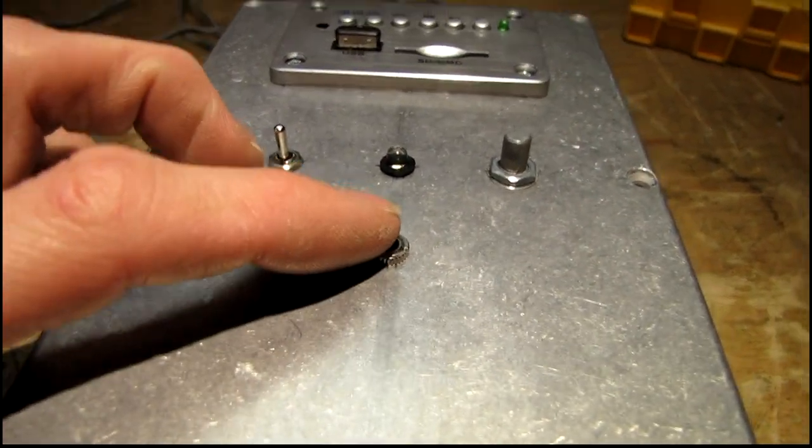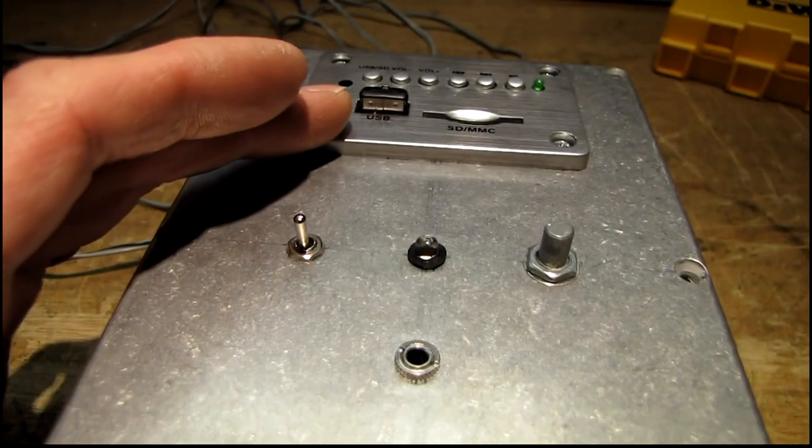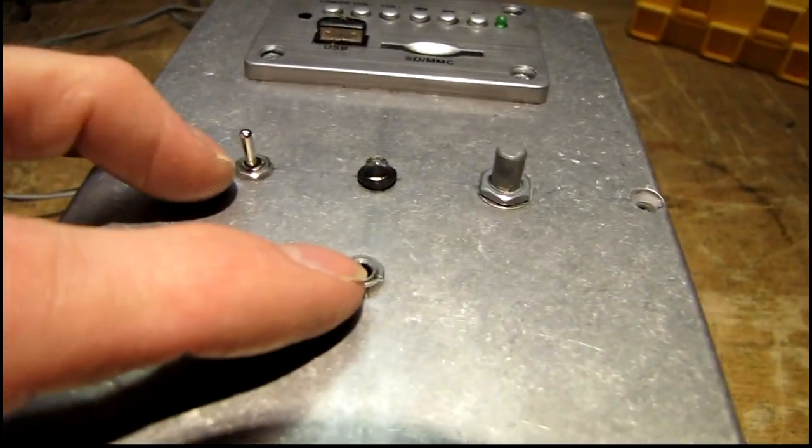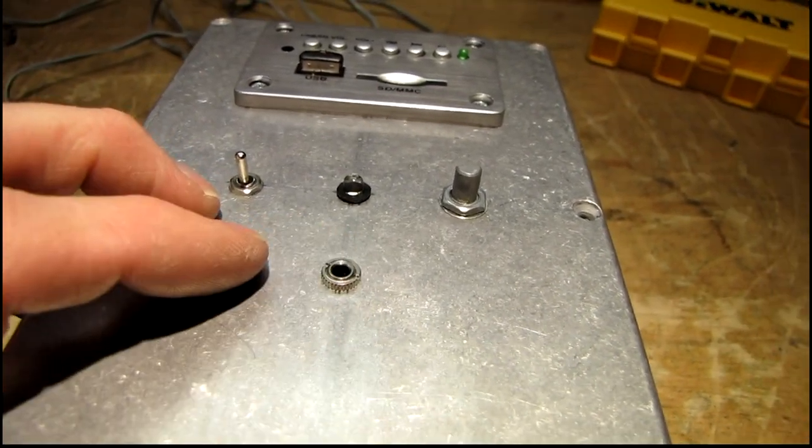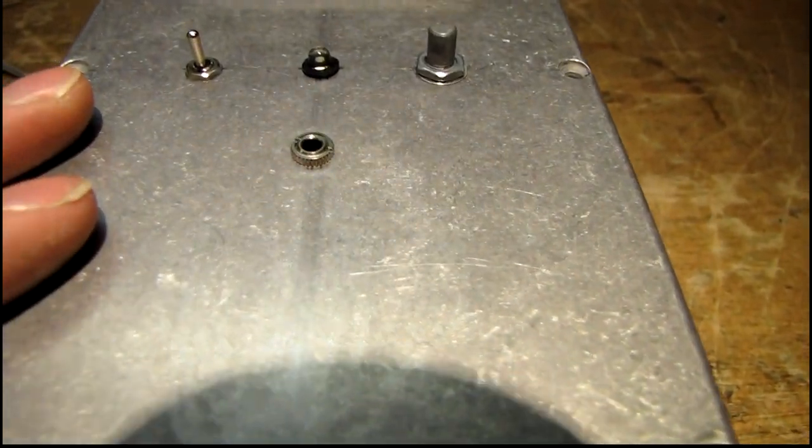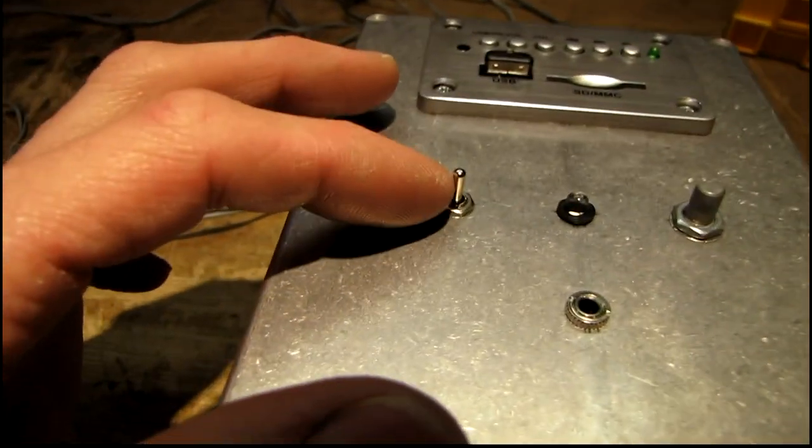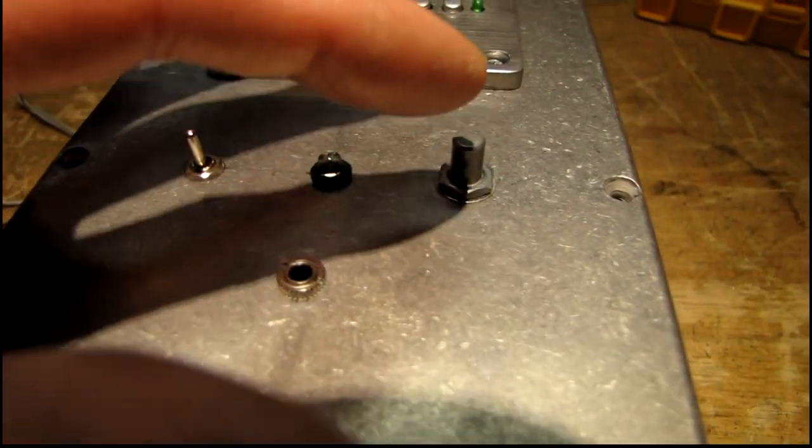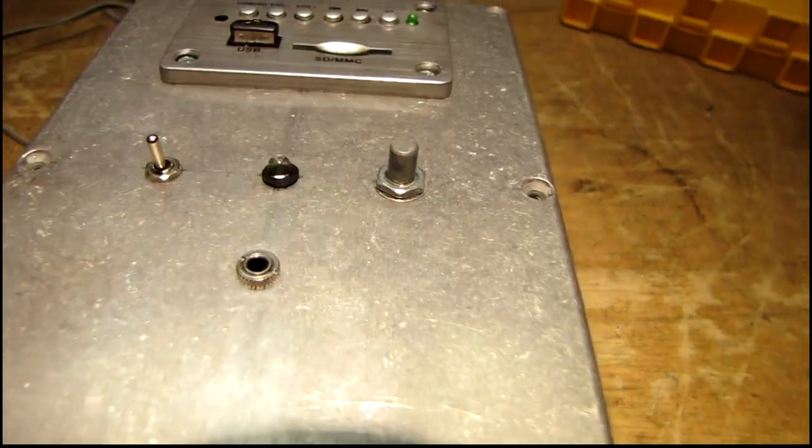On the front panel there's a line output jack coming directly off the MP3 module. That'll just give you something to test an existing amplifier if you want to know if that's working or not. Power switch, power LED, and the volume control for the amplifier board.